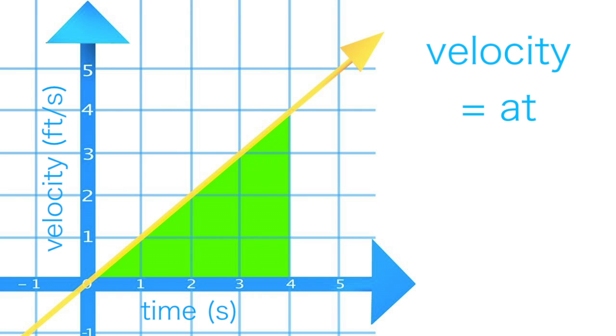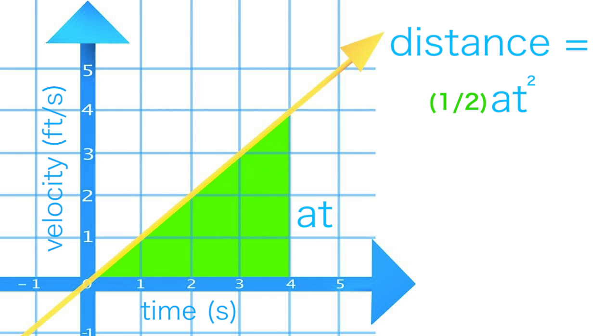The base of the triangle is time, and the height of the triangle is acceleration times time. So to find the area of the triangle, we take one-half times its base times its height, which gives us the distance the object traveled. In general form, the distance equation is one-half times acceleration times time squared.